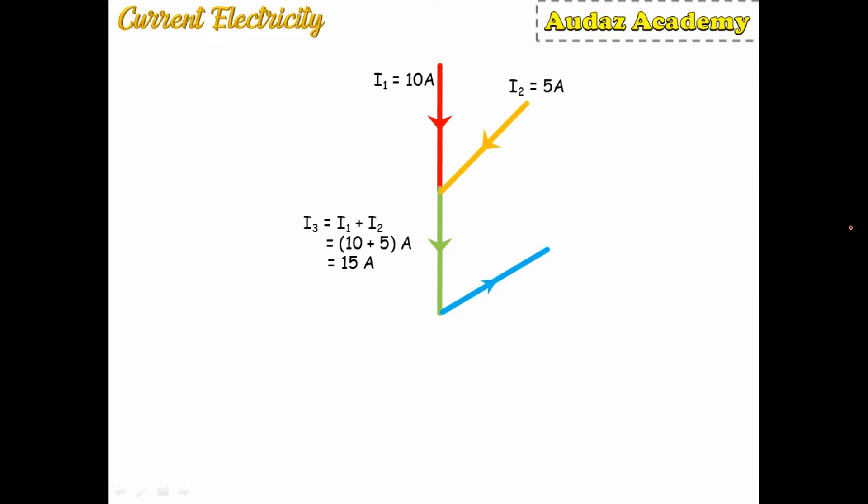i3 takes the value of i1 + i2 = 10 + 5 = 15 amperes. There is another conductor i4 going away from the junction of i3, with a value of 2 amperes — since it leaves the junction, it is negative. Therefore i5, the dark blue conductor, equals i3 − i4 = 15 − 2 = 13 amperes.